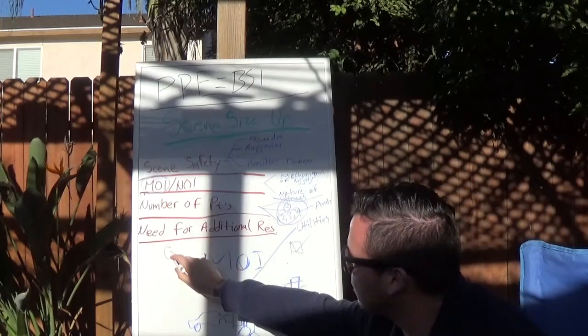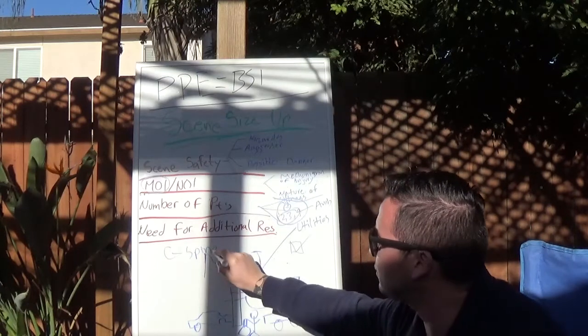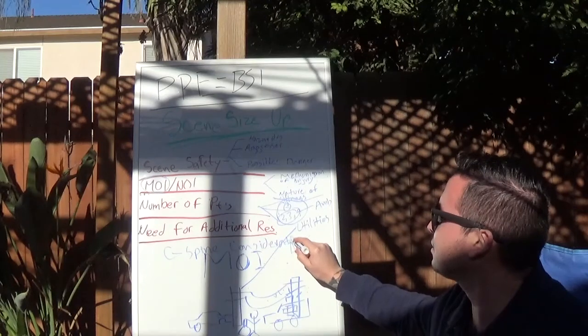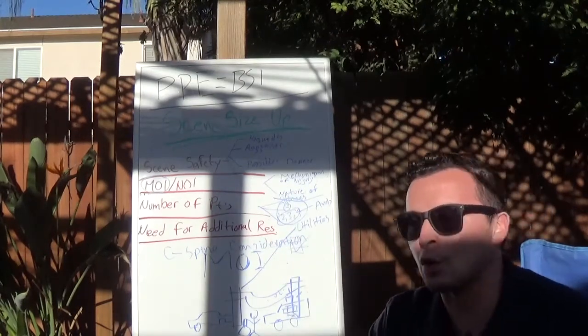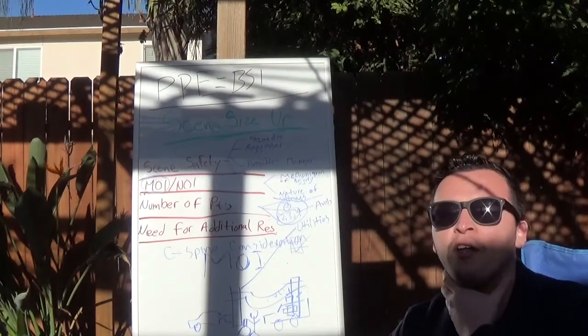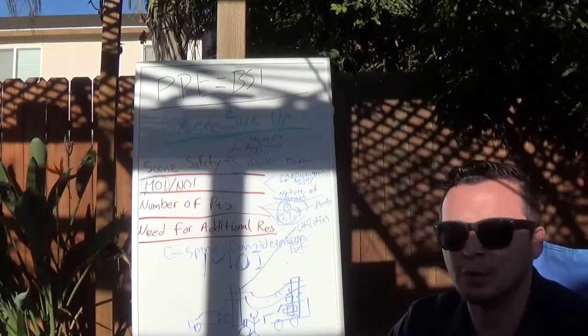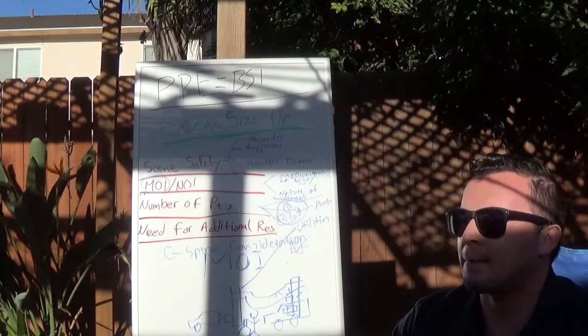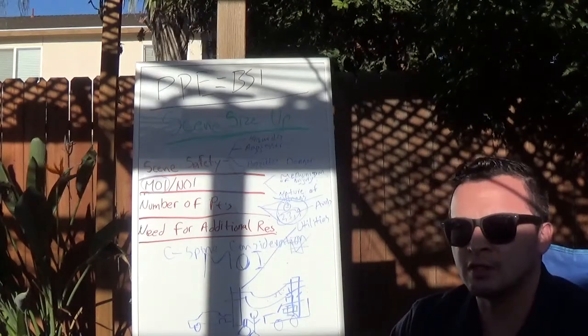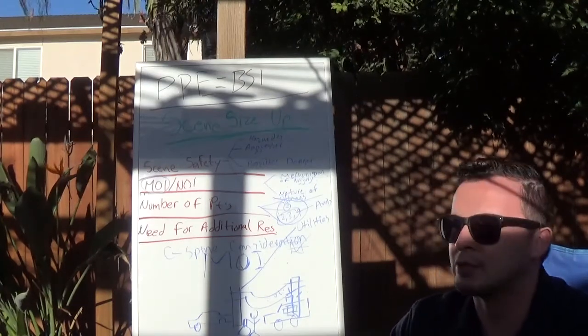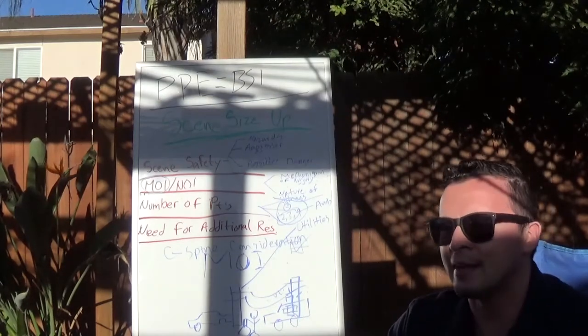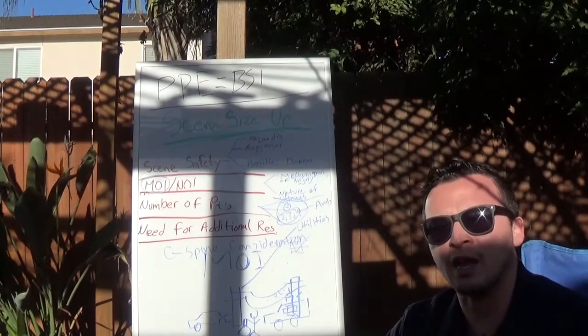And then I forgot to add this one, but it's C-spine, C-spine consideration. Now this depends on your instructor and your course. Some courses I know say that you have to put a C-collar on them. That's what this means, C-spine consideration. But it really depends on your instructor again. All I would say if I was a student, and if my instructor allowed this, was that I would just ask or just kind of state if there's anything that dictates that I should put a C-collar on my patient, I would do so after asking them.